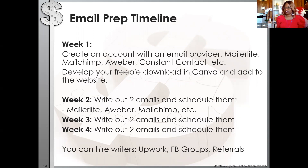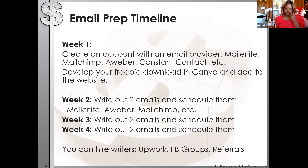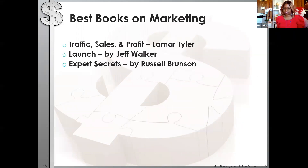Week two: write out two emails and schedule them in whatever tool you chose. We're working ahead, so write two emails and schedule them over the next two weeks. The next week, write out two more. The fourth week, write out two more. This puts you almost a month ahead, because you want to be sending an email every week. If you don't have time to write the emails, you can hire someone — outsource. Upwork and referrals are options. Recommended books: Traffic, Sales and Profit by Lamar Tyler; Launch by Jeff Walker; Expert Secrets by Russell Brunson.